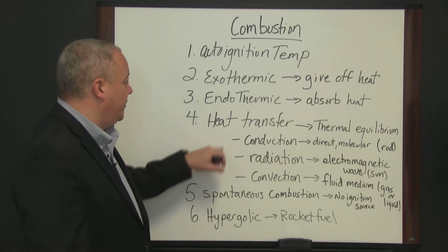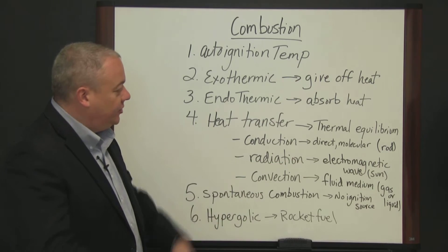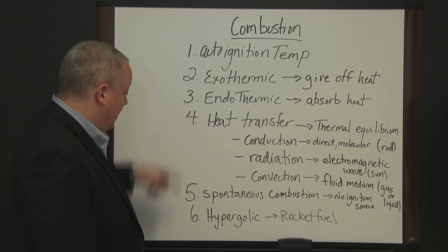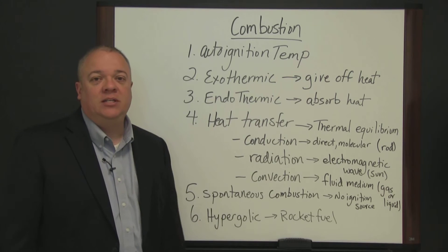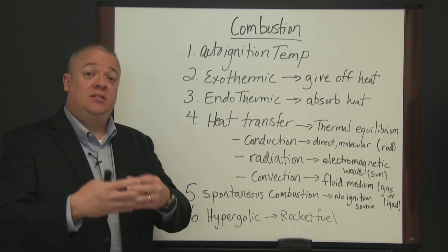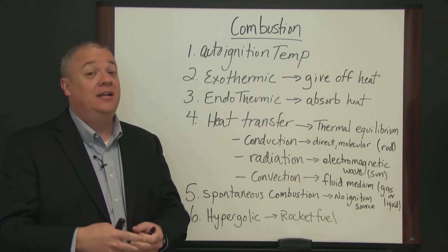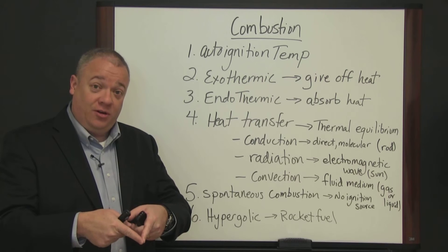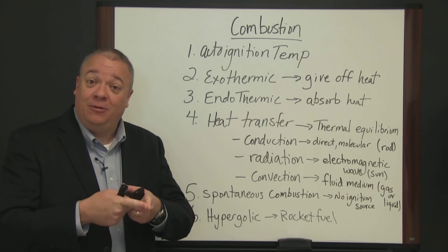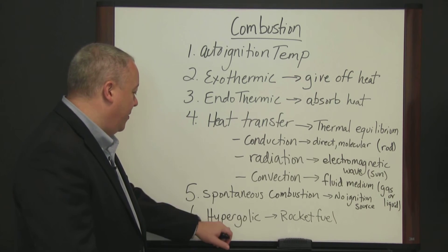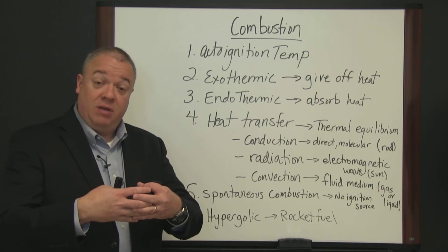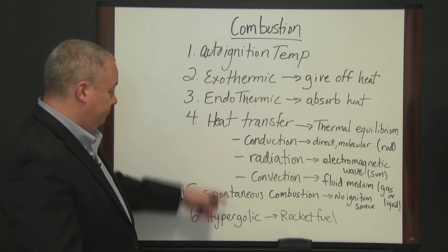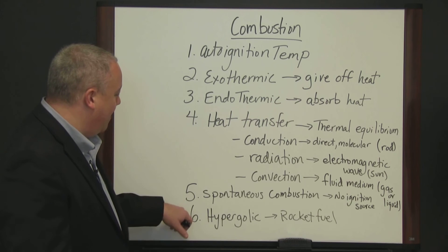So the main forms of heat transfer are: conduction — direct molecular transfer; radiation — electromagnetic waves; and convection — circular motion through a fluid medium, either gas or liquid. We also have hypergolic reactions: when one substance is brought into contact with another substance, it immediately ignites without needing an ignition source. This is used in rocket engines, where two separate substances are kept in different compartments and injected into a third at the same time. When they meet, combustion occurs automatically, propelling the rocket upward. Hypergolic substances combust when brought into contact with an oxidizer.